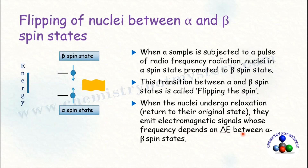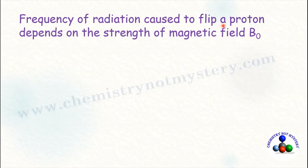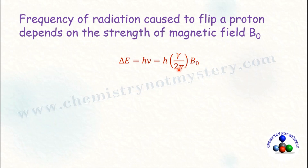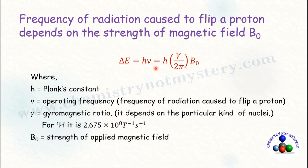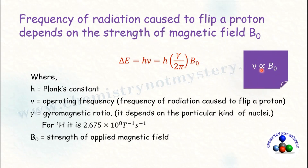The frequency of emitted signals depends on the energy difference between alpha and beta spin states. The frequency of radiation required to flip a proton depends on the magnetic field strength B0. The formula is: ΔE = hν, which is also equal to h × (γ / 2π) × B0, where h is Planck's constant and ν is the operating frequency. Thus, operating frequency is directly proportional to B0.